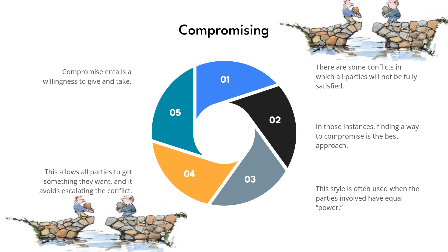Compromising. The compromising approach involves finding a middle ground or a solution that partially satisfies all parties involved in a conflict. It is especially useful when full satisfaction for all parties isn't achievable, but reaching an agreement is still essential to move forward.